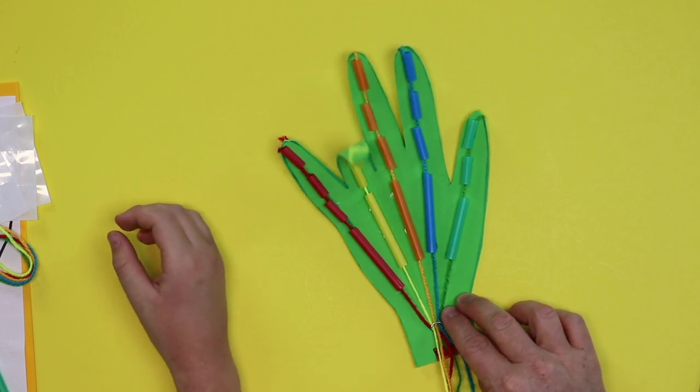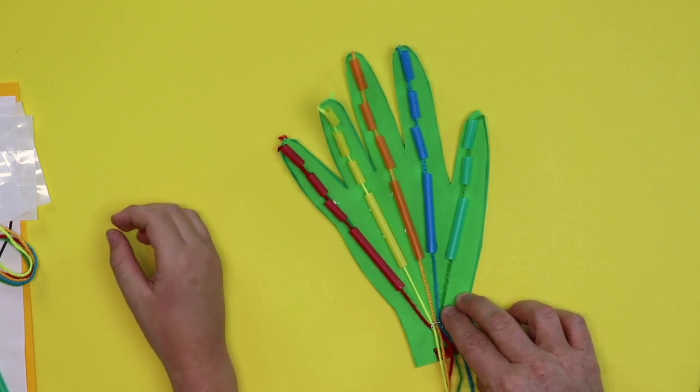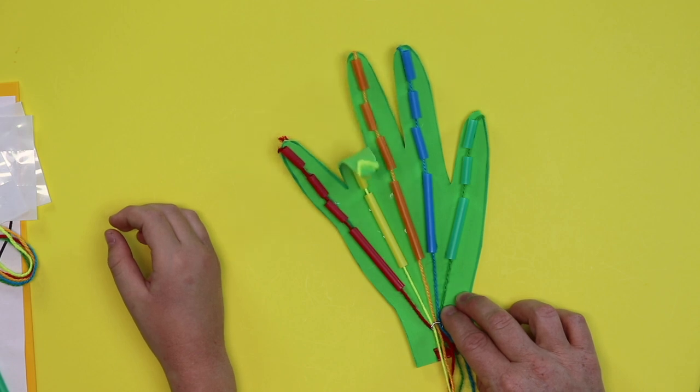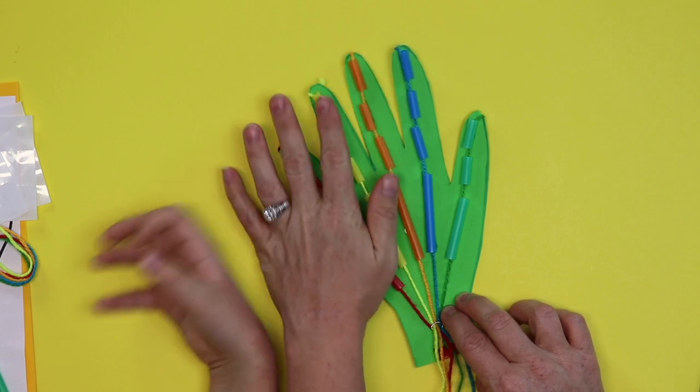So today when we're making this we're going to be learning all about our phalanges and our metacarpals. And these pieces of yarn act as our tendons. Tendons are what help us move our bones, move our body. Okay? Brooks and I are going to go ahead and start making the robotic hand. We'll give you step-by-step instructions but if we ever get too far ahead of you you can always pause the video and then press play when you're caught up. If there's a part that was confusing or you didn't understand you can rewind the video and then press play again. Ready? Yeah. Okay.